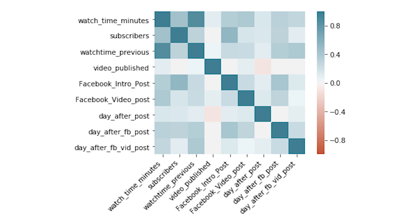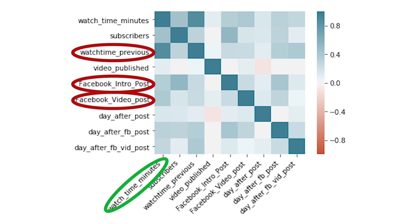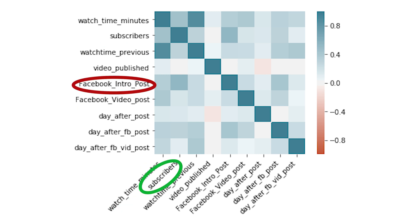I put in variables that I have access to and believe might be relevant. I wanted to look at what watch time is highly correlated with. I thought that the previous day's watch time would very likely be relevant, so I made a feature for that. I also thought that if I published a video, made a Facebook post, did one of these Facebook video posts, or any next-day effects of these posts, those would also be relevant. Also not in this matrix is day of the week, which I built into my regression model to see if any specific day was a determining factor. Facebook posts as well as the previous watch time are fairly highly correlated with the actual watch time of that day. We also see that the Facebook intro posts are highly correlated with the subscriber count.